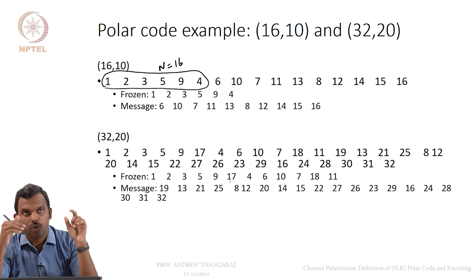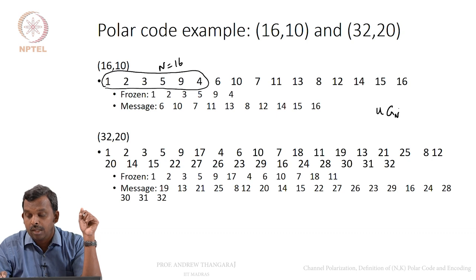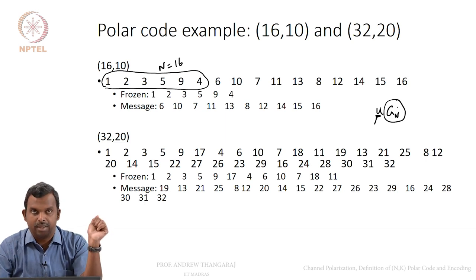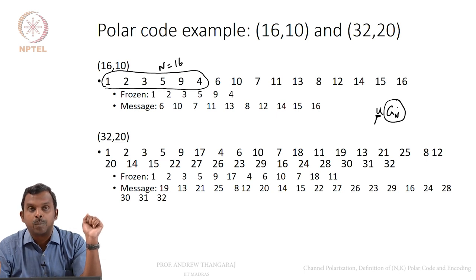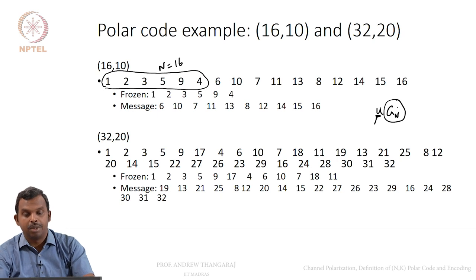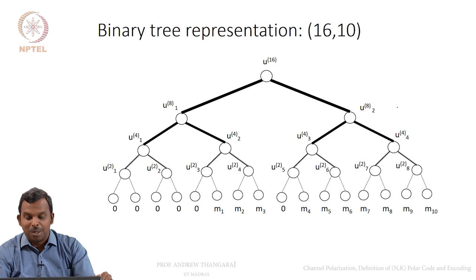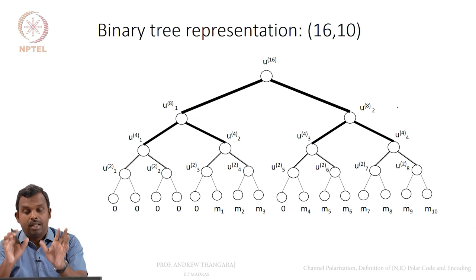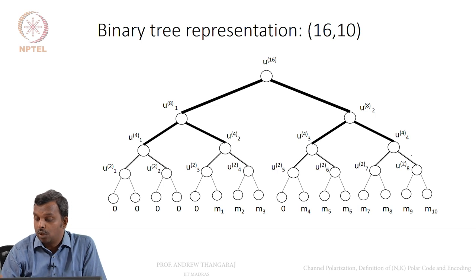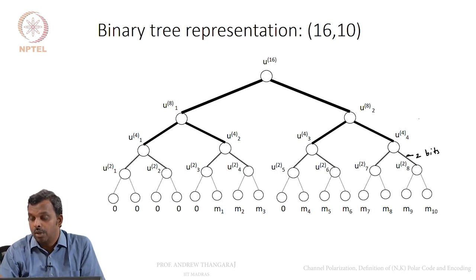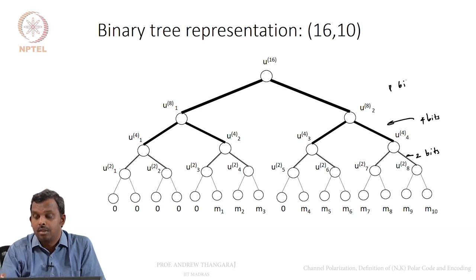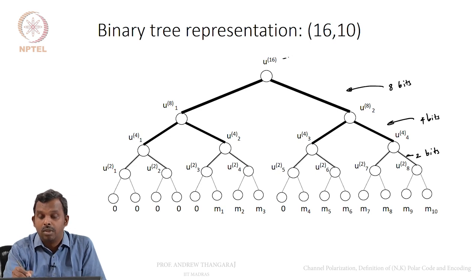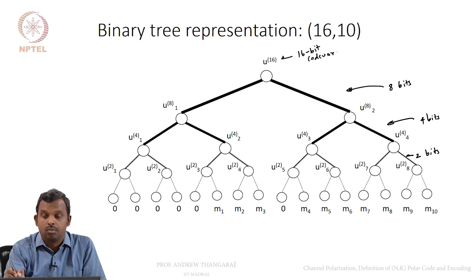Viewing the freezing as U times G_N is quite easy: you look at the non-frozen positions in U and the rows corresponding to G_N, and that gives you the generator matrix. Here is a full binary tree representation for the 16, 10 example. Frozen bits are 0 and the 10 message bits combine through the tree to create the 16-bit codeword. At each level: 1-bit inputs become 2 bits, then 4 bits, then 8 bits, and finally a 16-bit codeword.